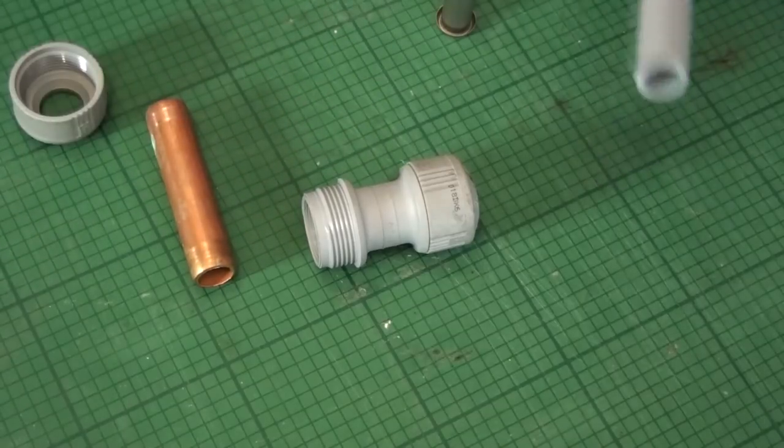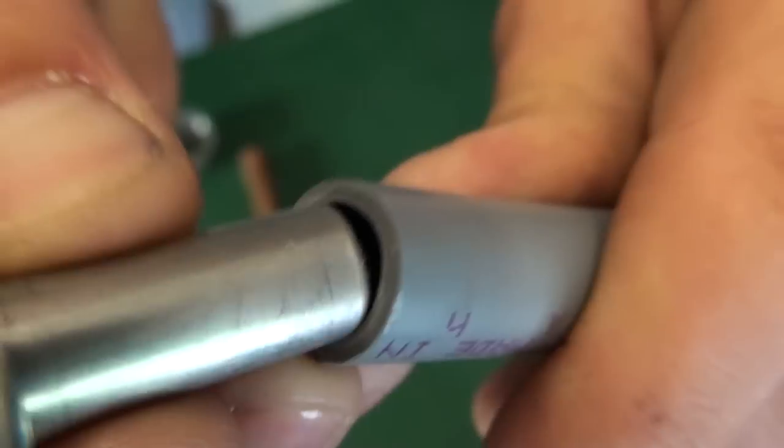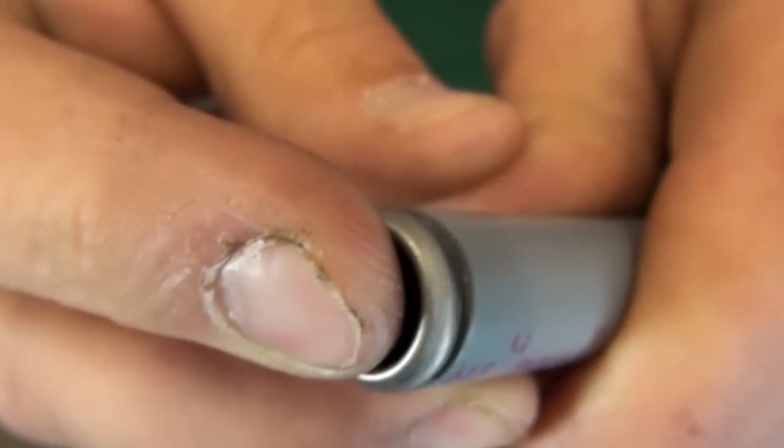Push fit fittings can be used on copper and plastic pipe. Plastic pipe requires a small metal sleeve to be inserted into it. This prevents the pipe from collapsing.